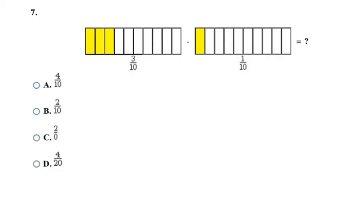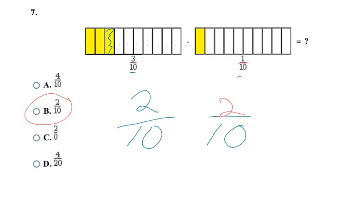Here's my next question. I have 3 tenths over 1 tenth. If I go through and I take out 1 of the tenths away from the 3 tenths, I'm going to be left with 1, 2 objects shaded out of 3, 4, 5, 6, 7, 8, 9, 10 total. So if I look at the models, I get an answer of 2 tenths. And if I look at the fractions that are written, I see that they both have a 10 in the denominator, so it's going to be the same in the answer. And then I subtract the top, so 3 minus 1 is 2. So 2 over 10, either way I do it, I get that same answer, which is going to be choice B.